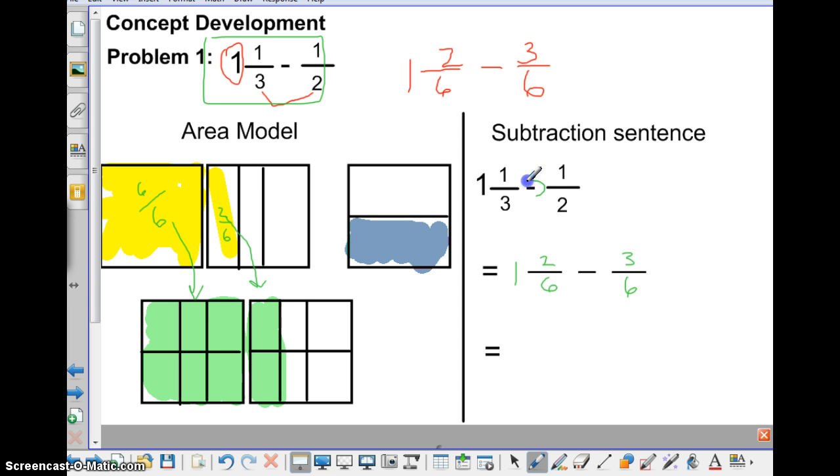So now we're subtracting. So we want to get rid of 3 of them. So we go back to where we cross them out. So we have 1, 2, 3 gone. And what are we left with in terms of 6ths? 1, 2, 3, 4, 5, 5/6. So that's our answer using the area model.